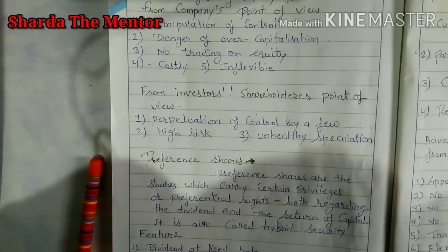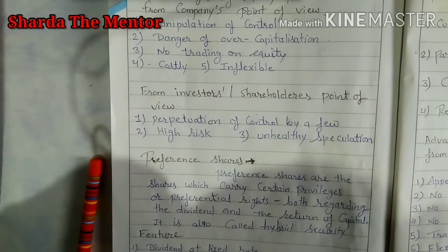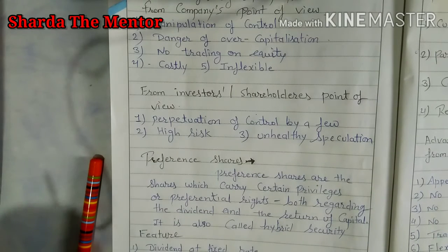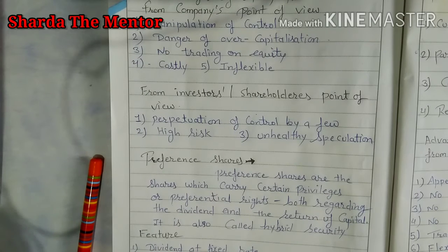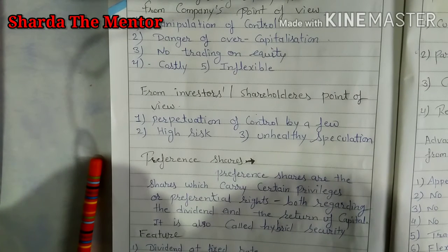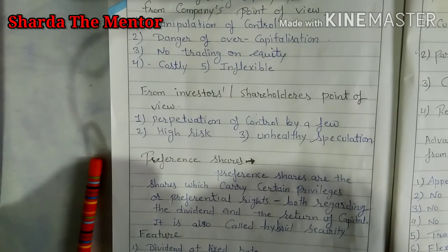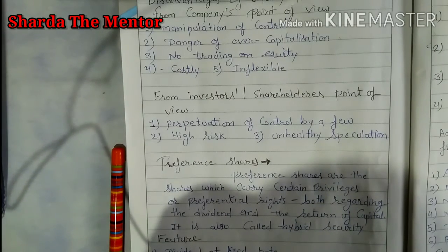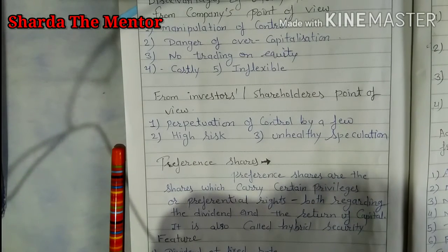Next is perpetuation of control by few. This is a disadvantage from the investor's point of view. If any preference shareholder wants to invest, it is considered a loss in terms of control, because although they are investors and shareholders, most of the control remains in the hands of equity shareholders. That is the disadvantage from the preference shareholders' or investors' point of view.